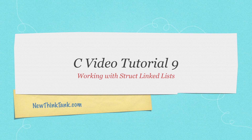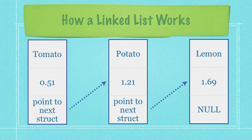The first thing I want to do is take a closer look at exactly what a struct linked list is. We're going to be working with products, and each one of these represents a struct product that we're going to be creating. Each struct is going to have a name, a price, and a next value which contains a pointer to the next struct. This continues on until we get to the end, where we put a null value.